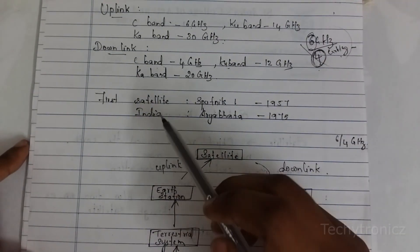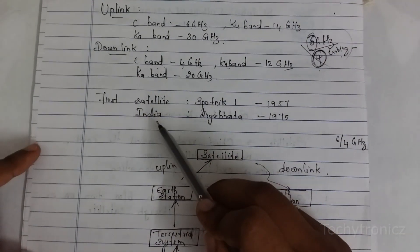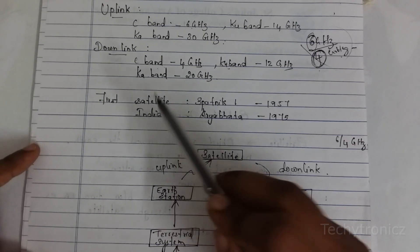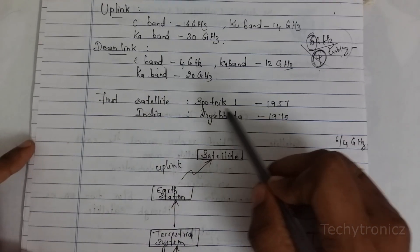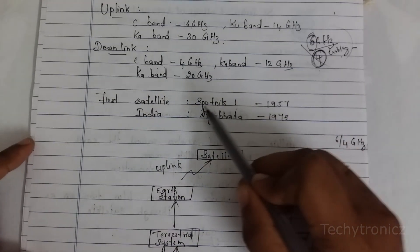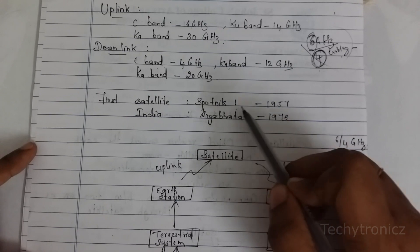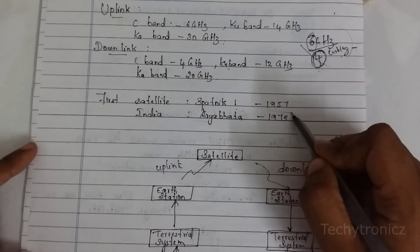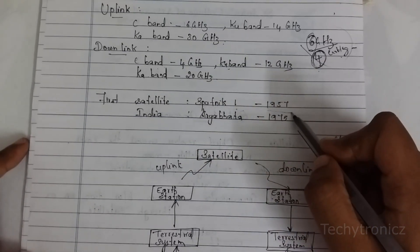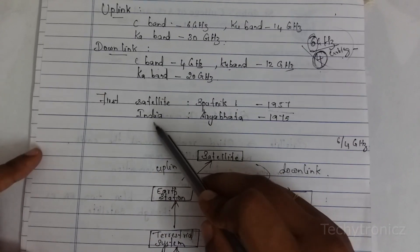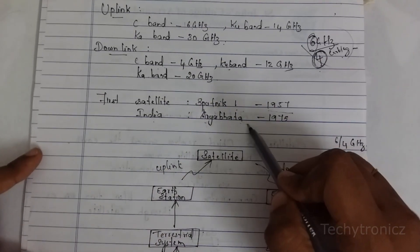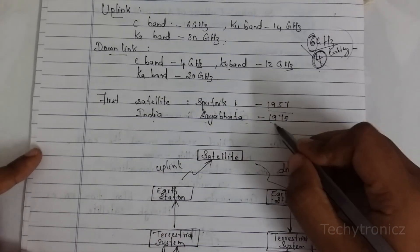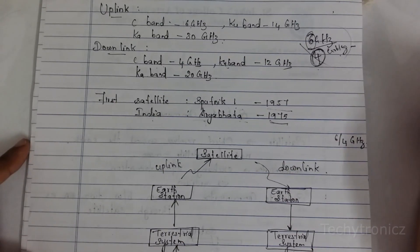In satellite communication, the first satellite launched is Sputnik 1, which was launched in 1957. Our India launched the satellite called Aryabhatta, which was launched in 1975.